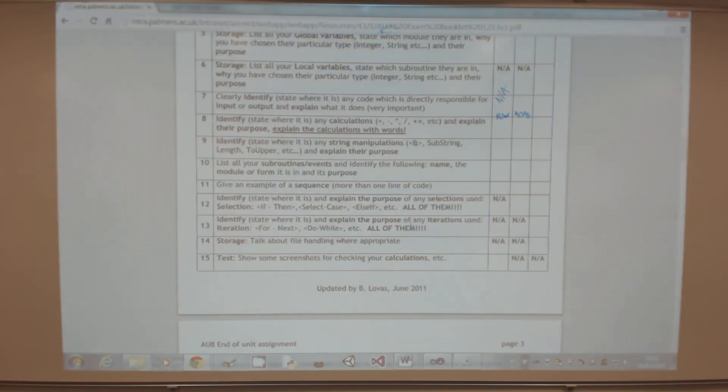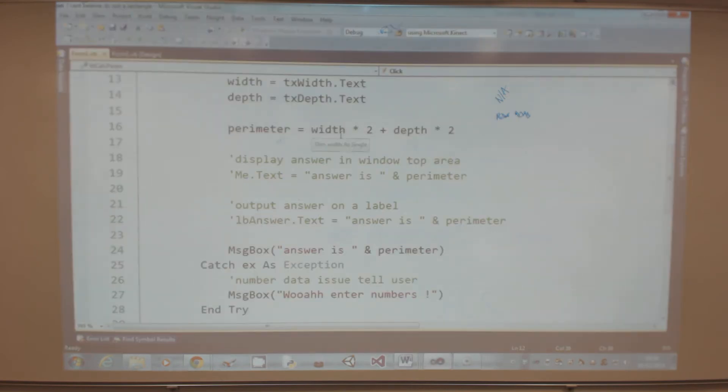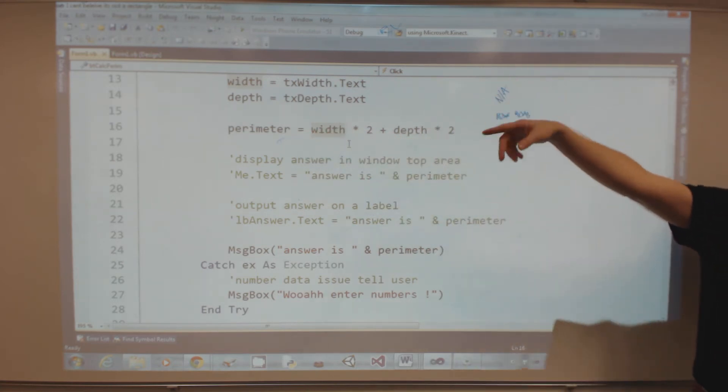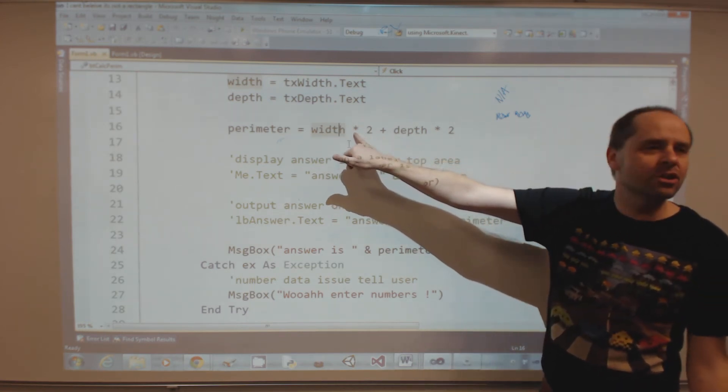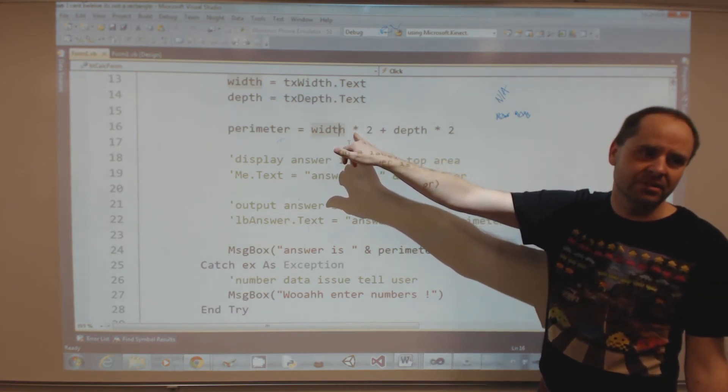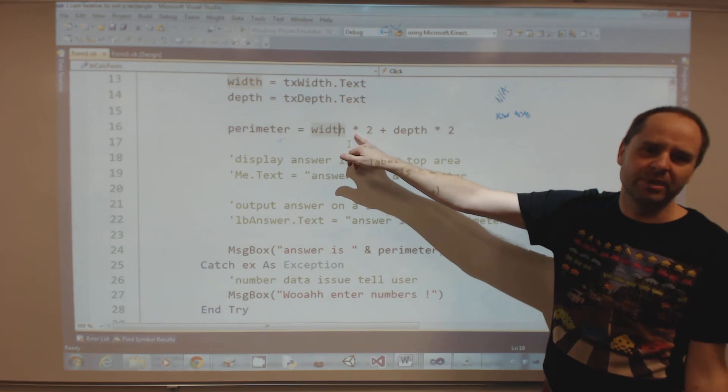We've then got calculations. We've got one calculation - it's not much of a calculation, but there is one and you need to explain it. Obviously yours is a little bit more complicated because you've got pi and some divides and stuff. But explain - don't assume someone knows what the asterisk means. We know it means multiply, but people would think x is multiply, but it isn't in programming.